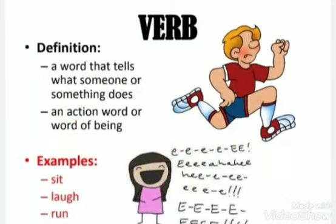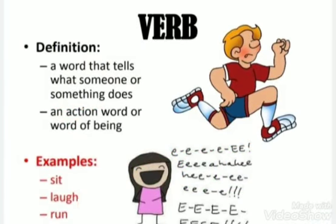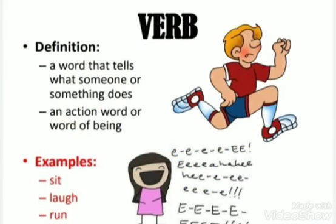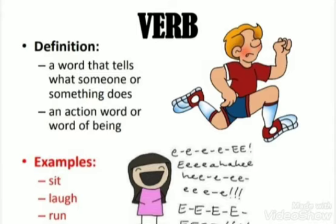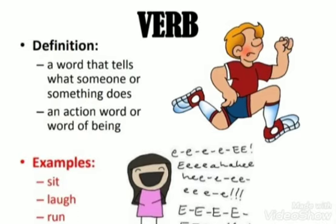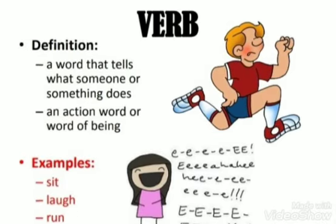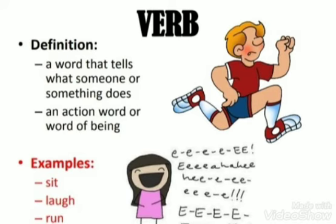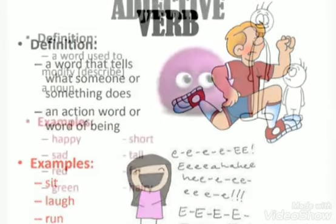Now the third one is verb. A word that tells what someone or something does — an action word or a word of being. For example: sit, laugh, run, eat, cry, etc.